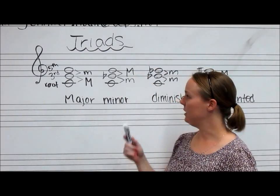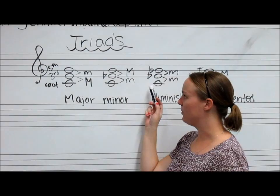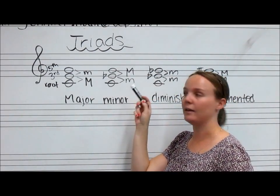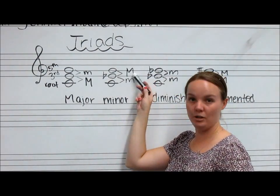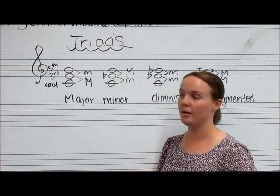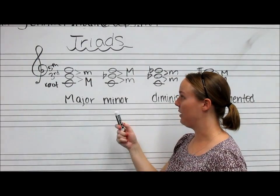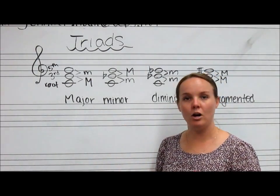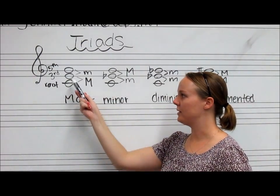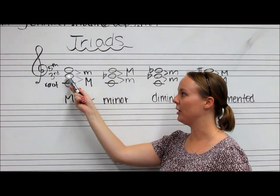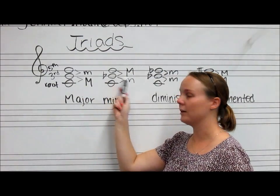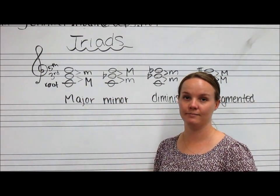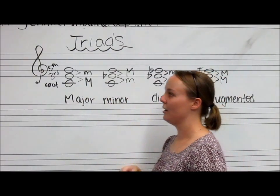Similarly, if you swap that around — if you have the interval of a minor third on bottom and the interval of a major third on top — you're going to have a minor triad. Really all that's happened between these two is that I've taken my third and lowered it by a half step with the flat sign.